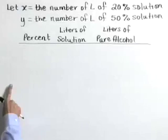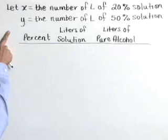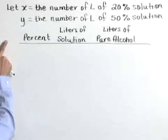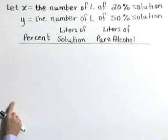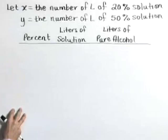We've completed step one, we've read the problem carefully. In step two, we'll define our variables. Let X represent the number of liters of 20% solution and let Y equal the number of liters of 50% solution.